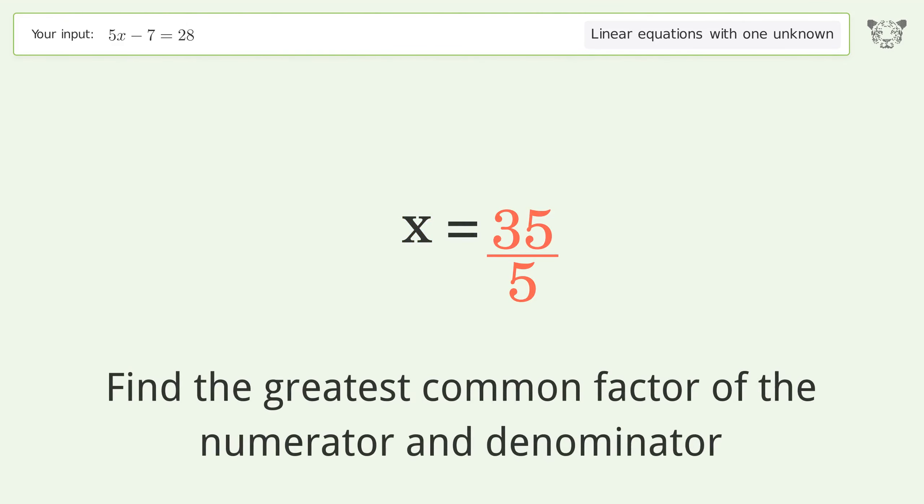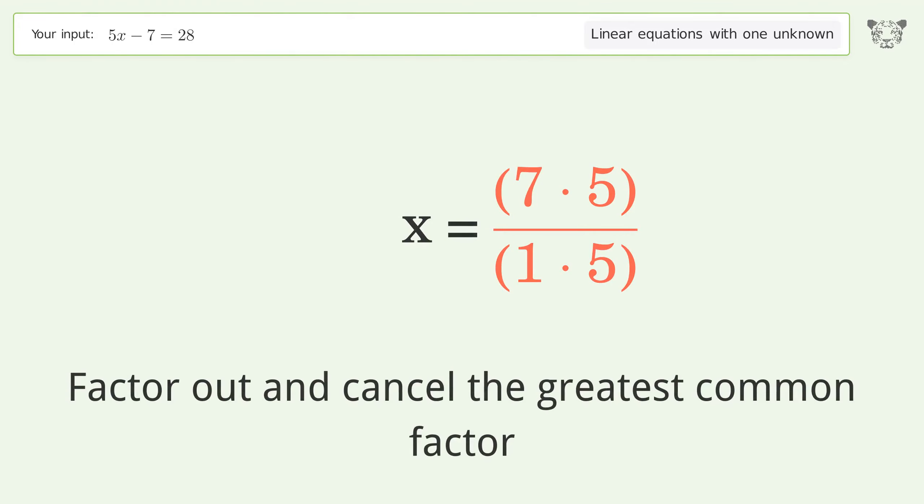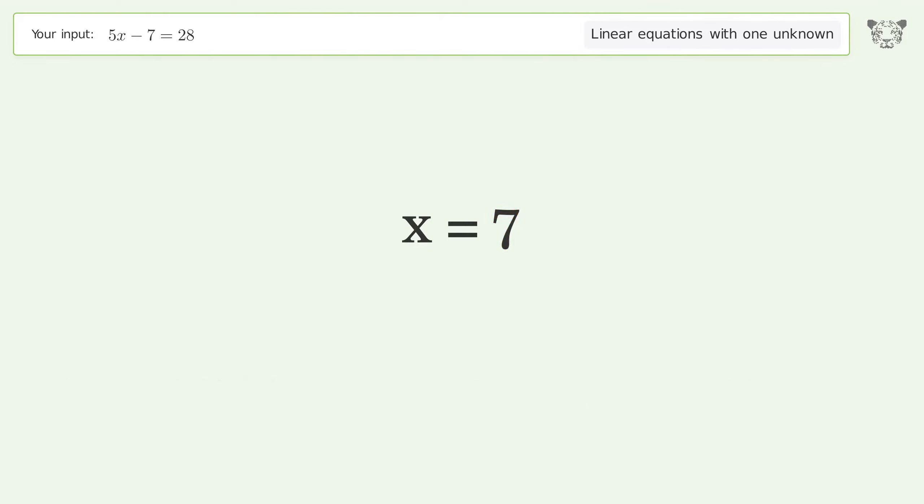Find the greatest common factor of the numerator and denominator. Factor out and cancel the greatest common factor. And so the final result is x equals 7.